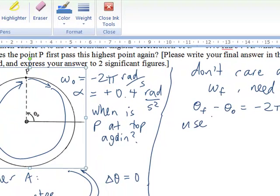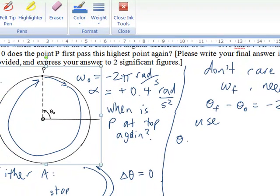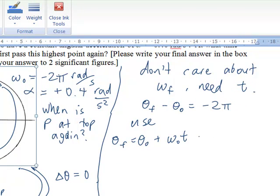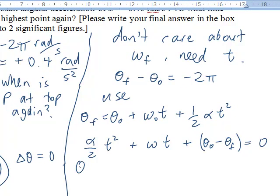So, let's use theta final equals theta initial plus omega sub zero t plus one-half alpha t squared and solve for t. So, this looks like a quadratic. Let's form it into a quadratic.